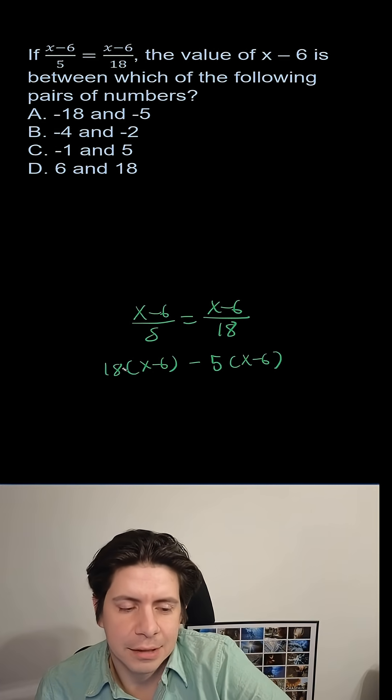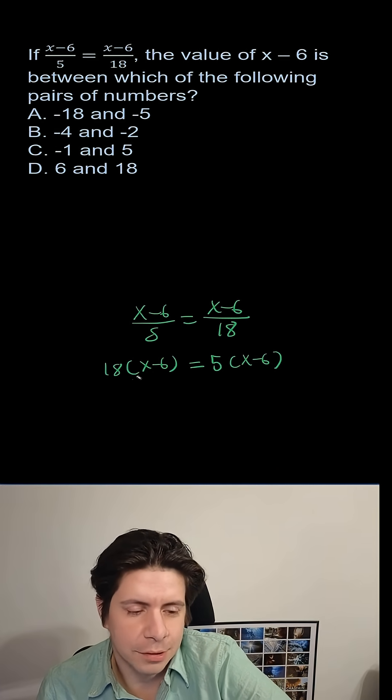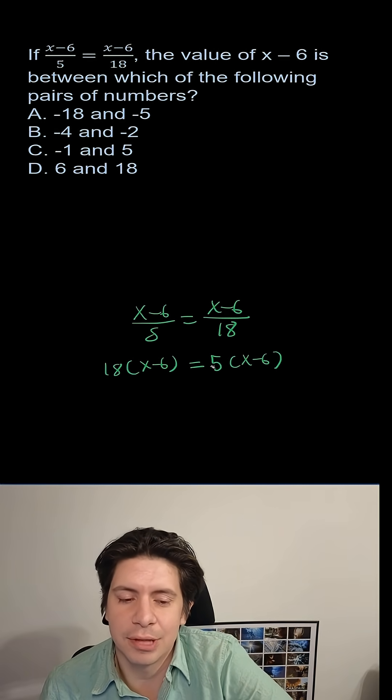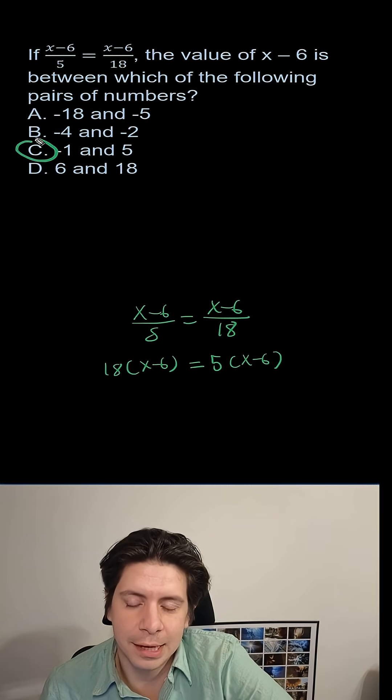So what happens now? Think about it. 18 times what equals 5 times what? How could that work? These things have to go away, so they have to be 0. So x-6 has to equal 0. That must mean it's between -1 and 5.